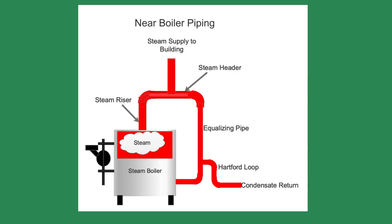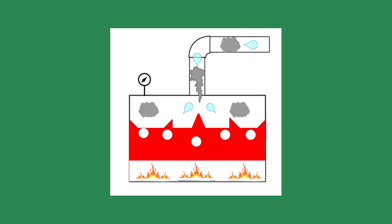Near-boiler piping is the piping directly connected to the boiler. This piping is critical to proper steam operation, as it helps to dry the steam before it enters the system piping. If incorrect or undersized, carryover could occur. Carryover is when slugs of water are carried out with steam and into the piping. Carryover lowers the system's efficiency by causing premature condensation of the steam, which could overload the steam traps and cause the system to stall — as a result, the brewer will not have steam available.